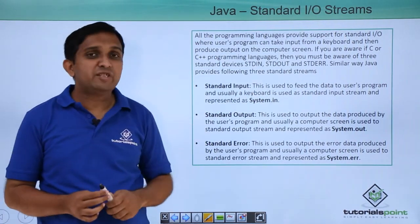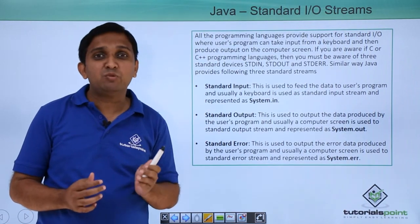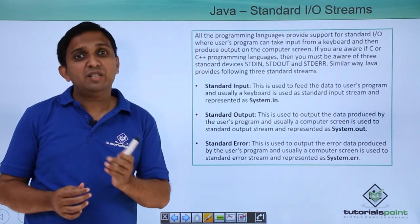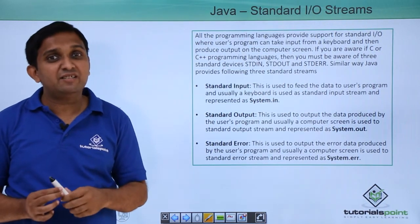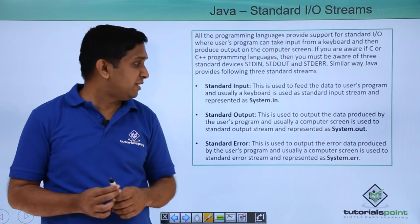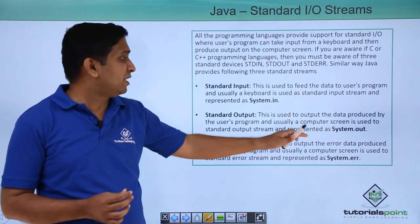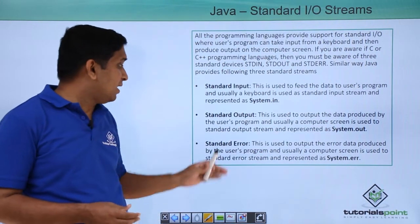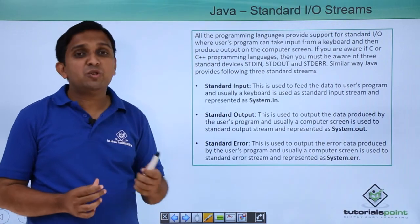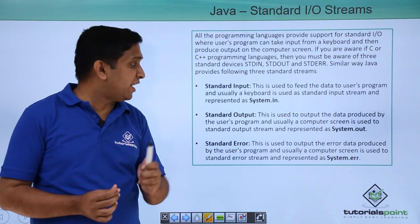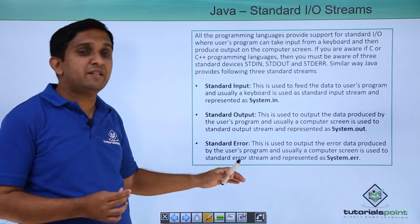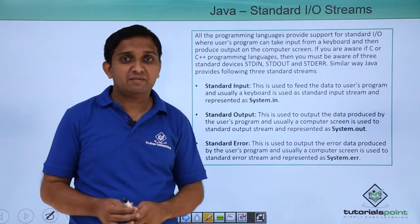Next is the standard output stream. The standard output stream outputs the data produced by the program to the standard output, which is generally the computer screen. It is represented by System.out. There is also a standard error stream, used to produce error output, and it is represented by System.err.